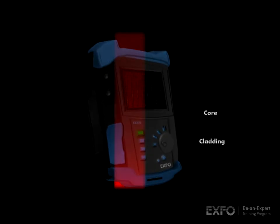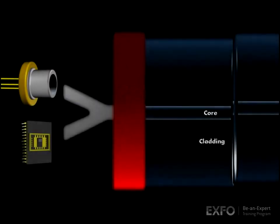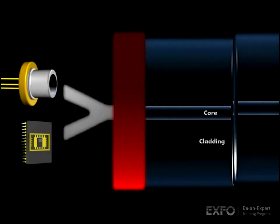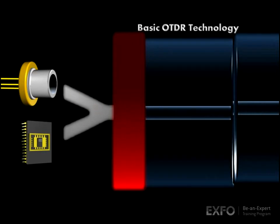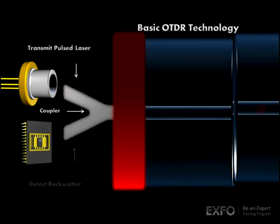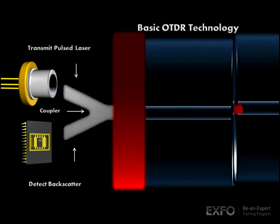Let's take a look inside the OTDR. The basic components are a transmitting laser, an optical coupler, and a receiving photo detector. The transmitter pulses light through the coupler into the core of the fiber, and the detector receives and measures light returning through the coupler.